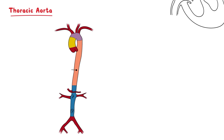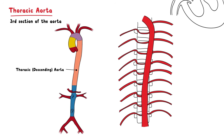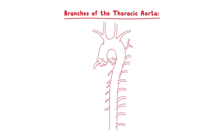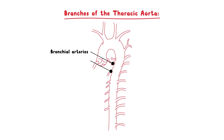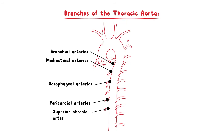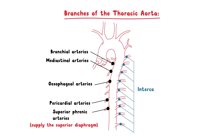The third part of the aorta is the thoracic aorta, or descending aorta, which continues from the aortic arch and spans from the level of T4 to T12. Initially it begins to the left of the vertebral column, but approaches the midline as it descends. It exits the thorax via the aortic hiatus in the diaphragm, where it becomes the abdominal aorta. The branches of the thoracic aorta in descending order are the bronchial arteries, mediastinal arteries, esophageal arteries, pericardial arteries, the superior phrenic arteries supplying the superior diaphragm, and the intercostal and subcostal arteries — paired arteries that branch off throughout the length of the posterior thoracic aorta. There are nine pairs of intercostal arteries.